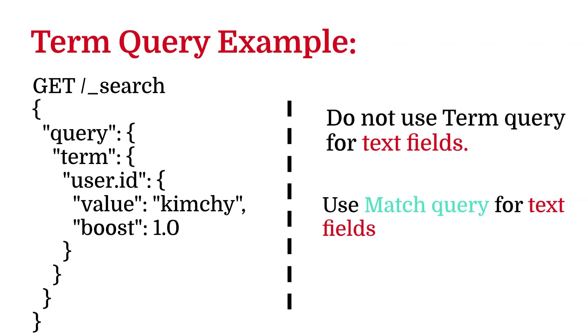Now let's check some examples of the term query. In this example, user.id is known as the field. It has three parameters. Value, it's a mandatory parameter that accepts the search text. Boost, it's an optional parameter. It accepts a floating point value that defines the relevant score of a query. Default value is 1.0 for boost. This topic is a bit complex to understand. Let me know in the comment section if you want to learn more about the relevant score.